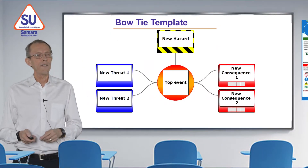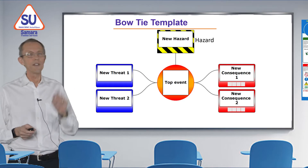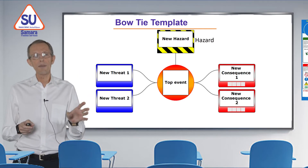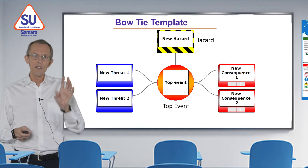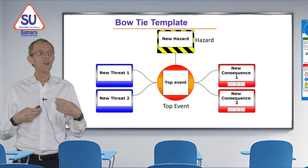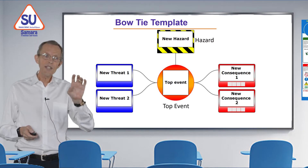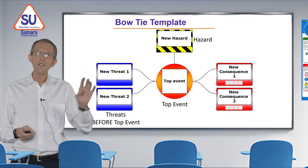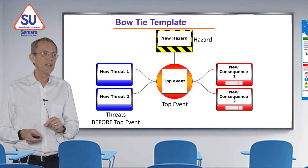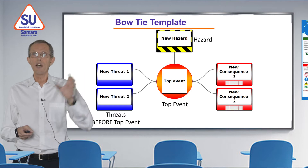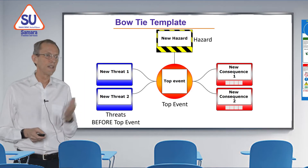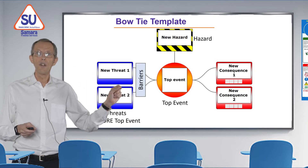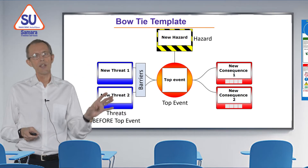You can see the picture here. At the top we have a hazard in the hazard shaded box, and it can be any hazard. Because of this hazard something bad could happen — we call that the top event. The top event is something harmful either to people, to property, or to reputation. Things that can cause the top event are threats. Threats happen before the top event, and if a threat happens it will cause the top event. So we want to put in place barriers to help us control the threat. That's one side of the bow tie.